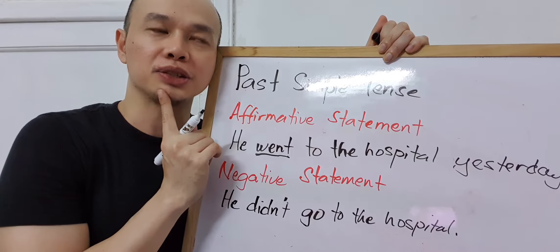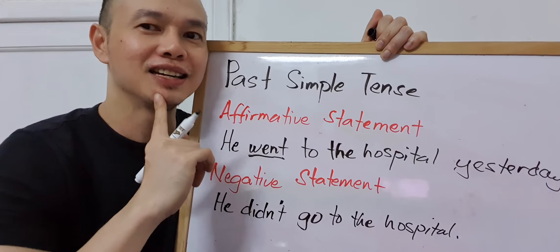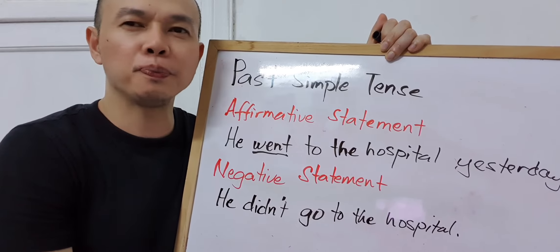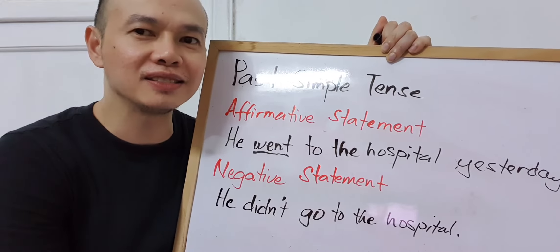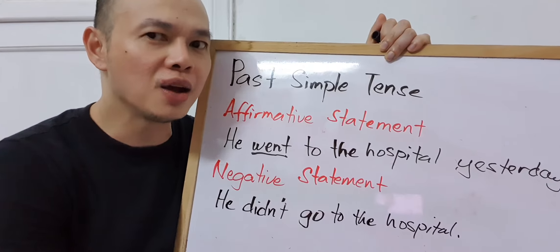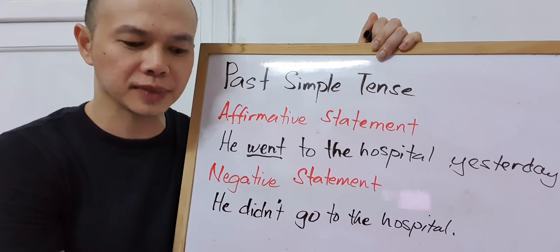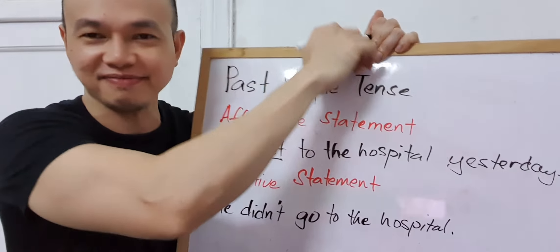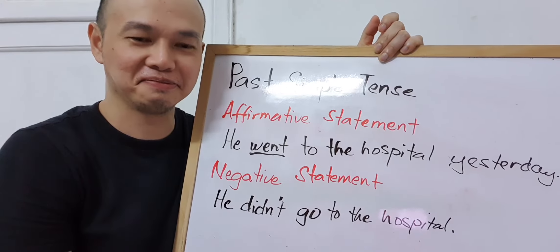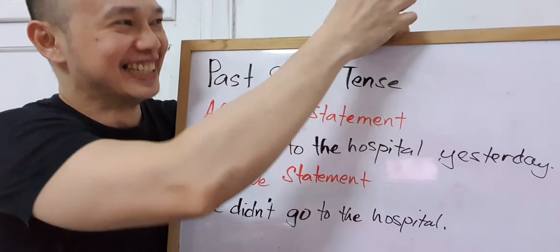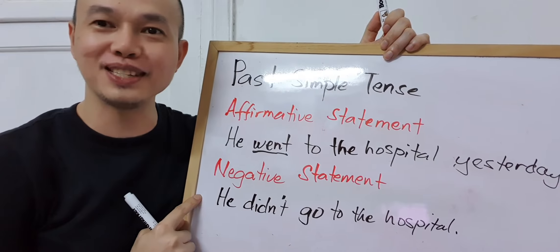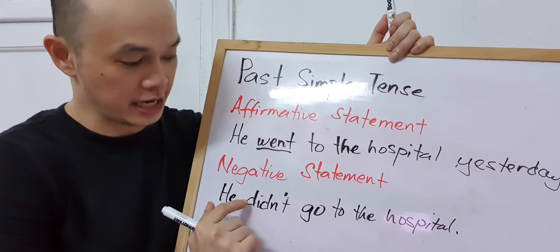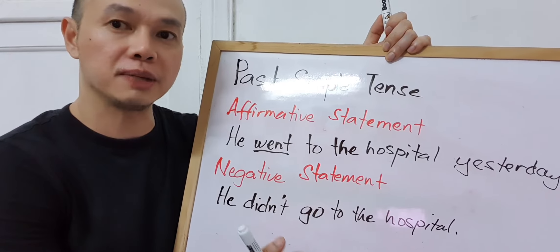I remember my English teacher had a joke: a student asked the teacher, 'Teacher, why did I failed in your class?' And then the teacher answered, 'That's exactly the reason why you failed.' So don't forget — if any 'do' verb is used as an auxiliary verb, like 'didn't,' it must be followed by the base form of the main verb.